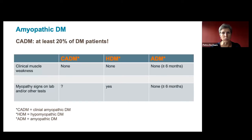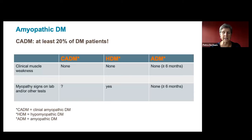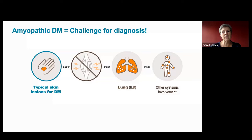Amyopathic dermatomyositis accounts for about 20% of the whole group. When further investigations reveal subclinical muscle involvement, it is called hypomyopathic; if after six months of intensive investigation no muscle involvement is found, it is true amyopathic dermatomyositis. This group is a challenge for diagnosis — you really have to know the skin disease well, and diagnosis is often delayed. Importantly, absence of muscle involvement does not mean absence of risk, as these patients can also have, and especially often do have, lung disease.